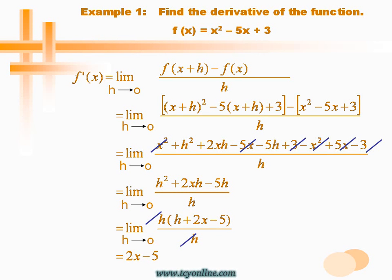Now divide the whole by h. Simplify by cancelling out the like terms, and you will reach the limit as h approaches 0 of h squared plus 2xh minus 5h over h. Take h common from the numerator so as to cancel with the h in the denominator, and you will reach the limit as h approaches 0 of h plus 2x minus 5. Put in the value of h equals 0, and you will get 2x minus 5 as the derivative of the given equation.